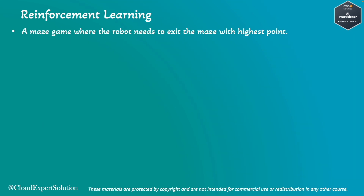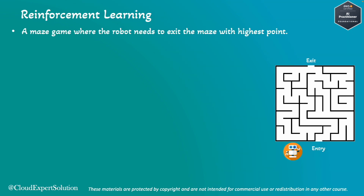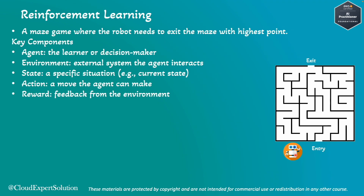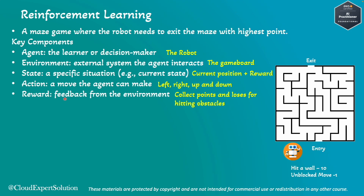Now let's understand reinforcement learning with a computer game example — a maze game where the robot needs to exit the maze with the highest points. The maze has an entry and exit point, and the robot is our agent. Mapping the key components: the agent is the robot, the environment is the game board, the state is the robot's current position along with the rewards it has collected, and the actions are moving right, left, up, or down to reach the exit.